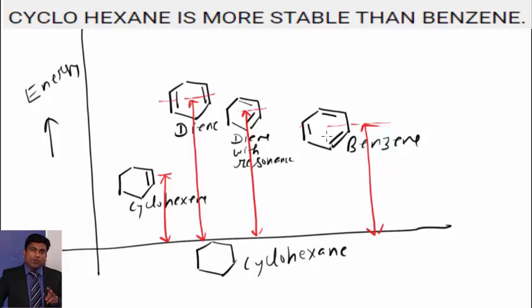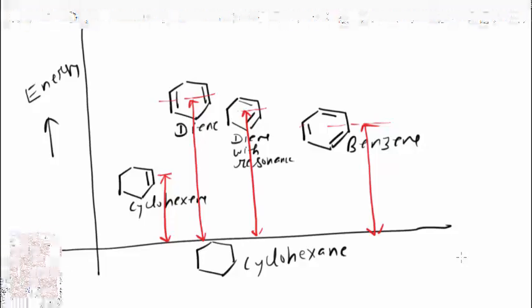Please note, whenever we break sigma bonds and instead of that sigma bond we write pi bond, system will be less stable. Hope this is clear to you. But if you have any doubts, you can write in comment box. And till then, bye-bye.